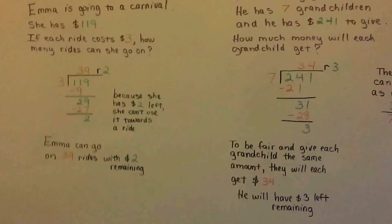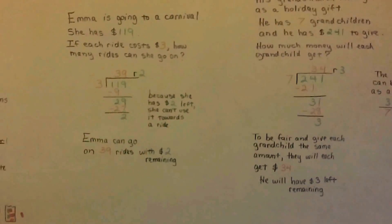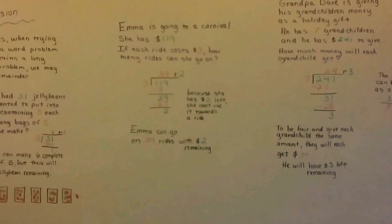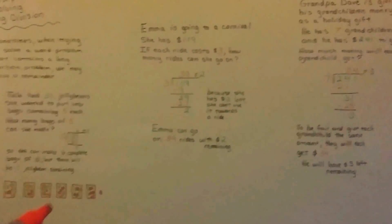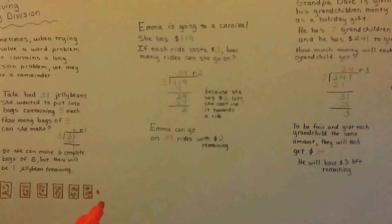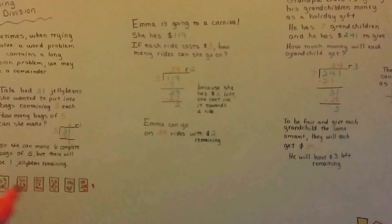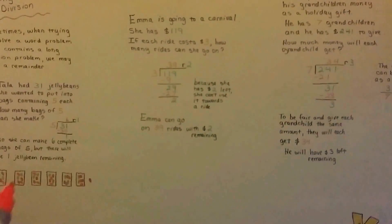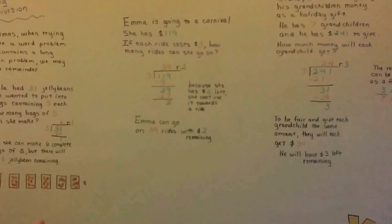So sometimes, word problems are going to have remainders. And they'll try to trick you and say how many total days or how many complete days or how many total bags can she make? And there'll be a remainder. And the answer is that she can make these complete bags but have one left over. So the answer is how many complete bags.